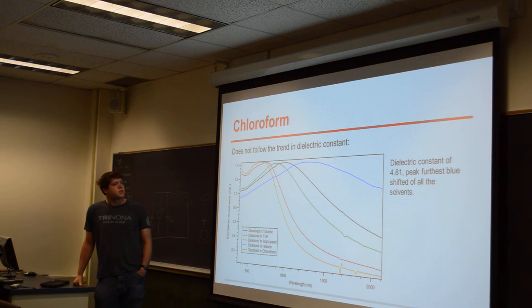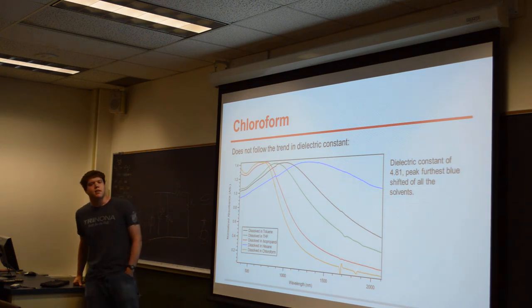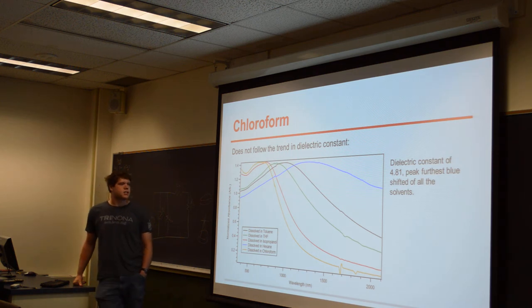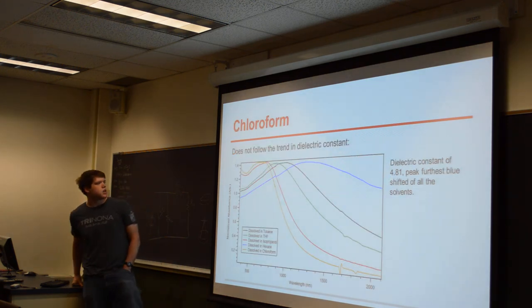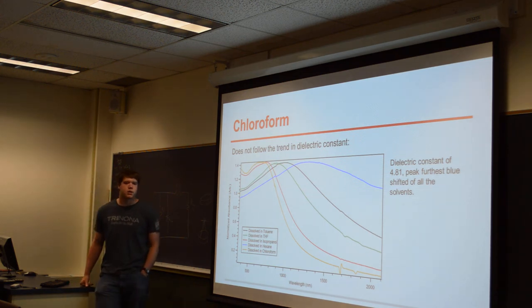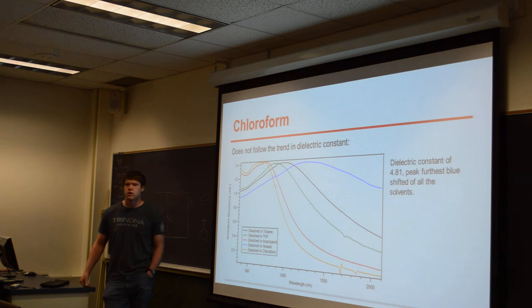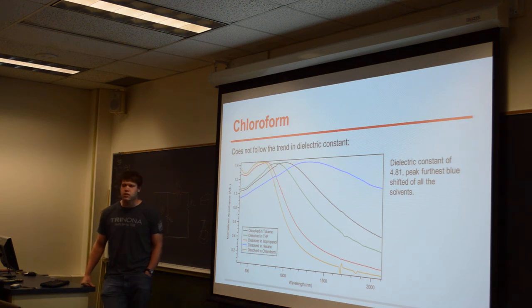Four of the solvents behave nicely, but the fifth — chloroform — did not. Chloroform has a dielectric constant of 4.8, which puts it about in the middle of the solvents we used, but it shifted the peak furthest to the high energies. We're not really sure what caused that. We're guessing there's some other interaction between the nanocrystals and the solvent going on, but we're not really sure what's causing that at this point.